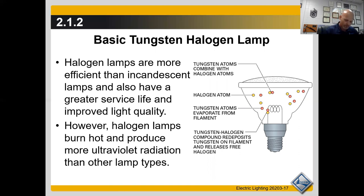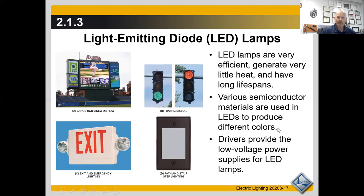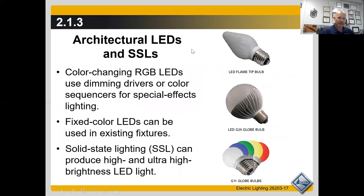Section 2.1.3 discusses LEDs — light emitting diodes — which are rapidly gaining popularity. Some of the latest ultra-high brightness LEDs can output light with an illumination efficiency of 100 lumens per watt at 350 milliamps. They generate little heat and have long lifespans. Various semiconductor materials are used to produce different colors, and drivers provide the low-voltage power supply for LED lamps.